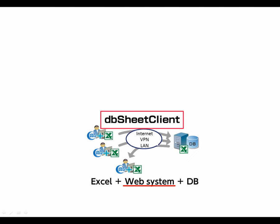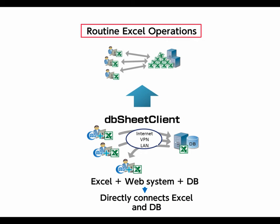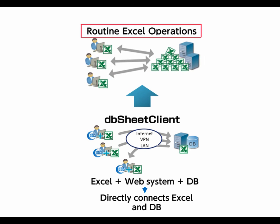DB Sheet Client makes Excel a web-enabled system, directly connecting Excel to a database. Therefore, it is a tool that benefits greatly from the application of routine Excel operations. Routine Excel operations refers to the standard use of Excel books to routinely distribute and collect data to and from employees engaged in the same work, and thus share, aggregate, and analyze information throughout the company.